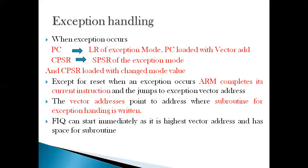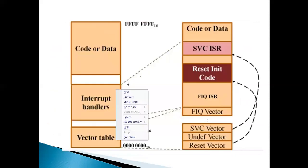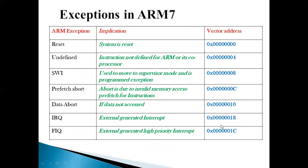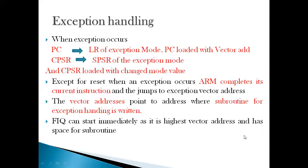All vector addresses basically contain one 32-bit address which further contains the address of another memory location where the subroutine for servicing that particular exception has been written. All of them normally jump to another address from their vector address, except for FIQ. The highest vector address belongs to FIQ, so FIQ can start storing its routine from that location instead of jumping to another address, since it has space available as the last entry in the vector table.